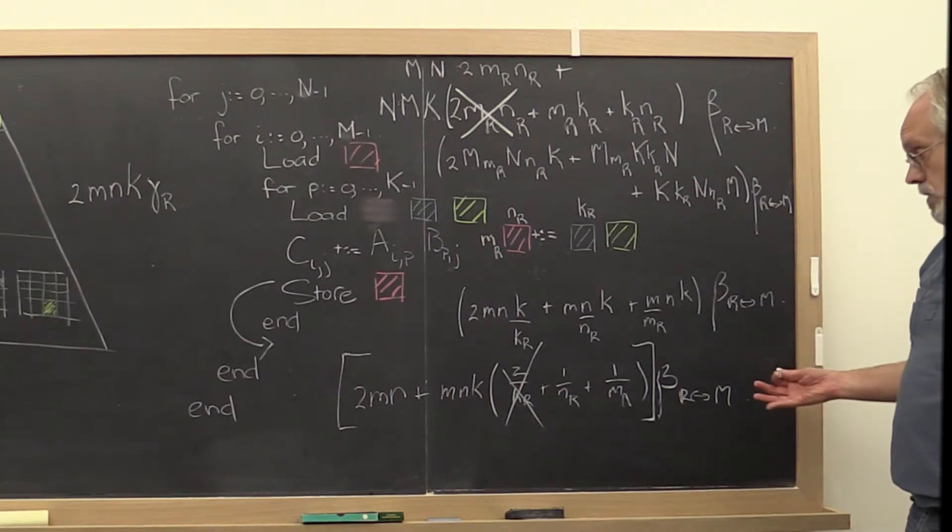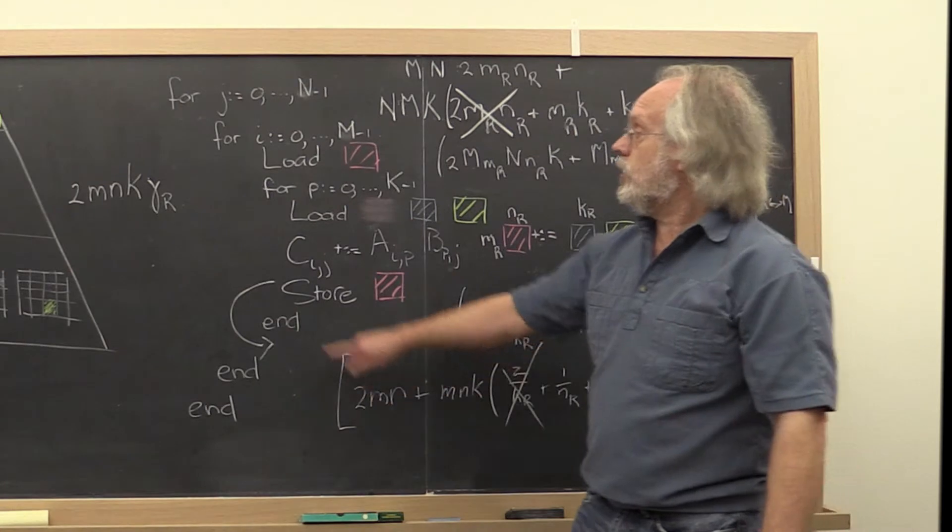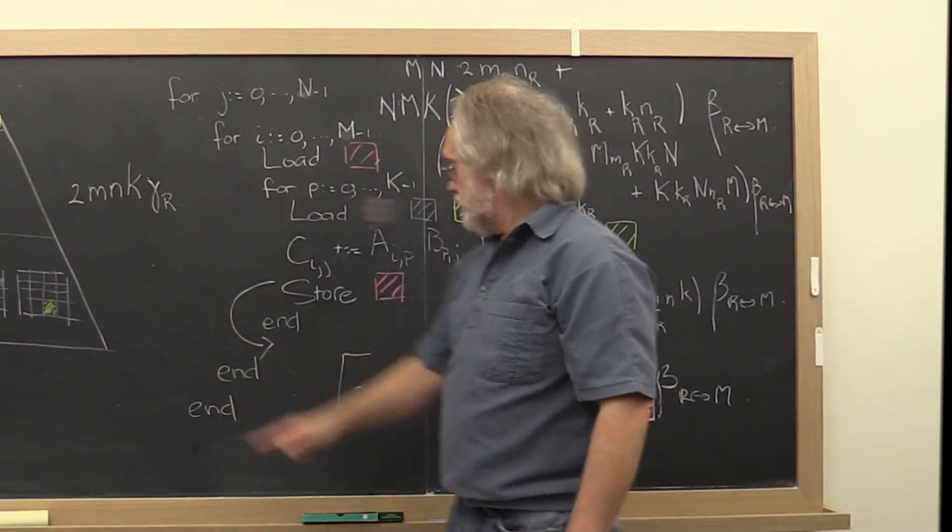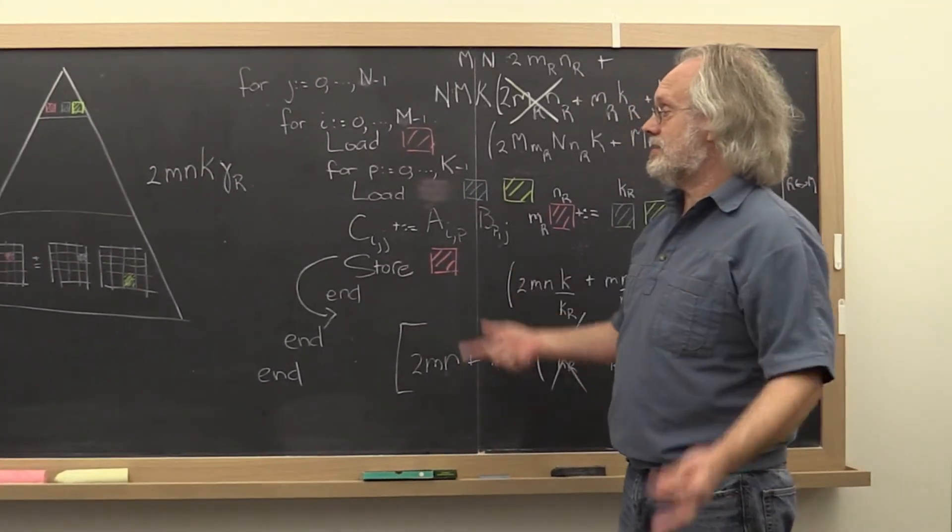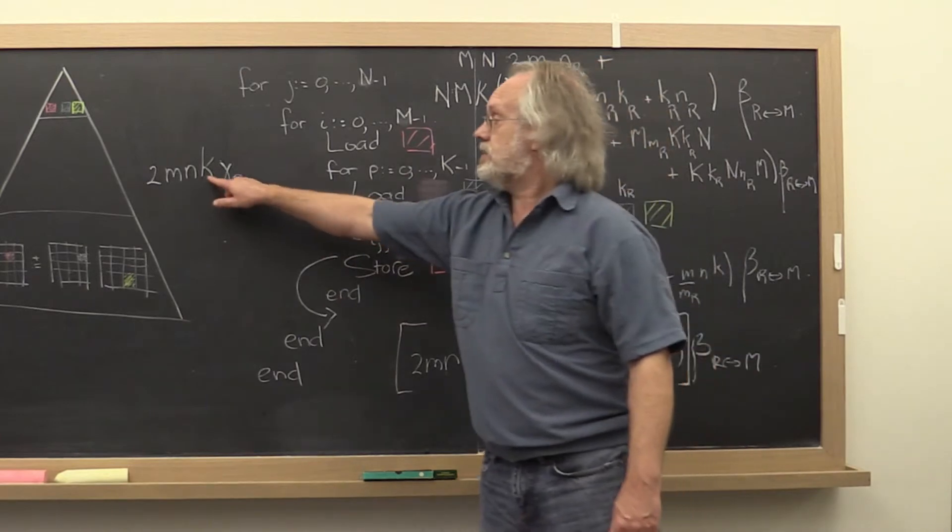So why is that good? Well, relative to the computation that we do, if k is large enough, this becomes what they call a lower order term and therefore becomes less and less significant as k gets larger.